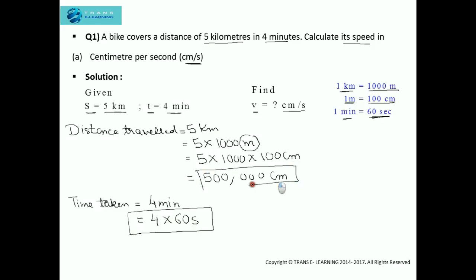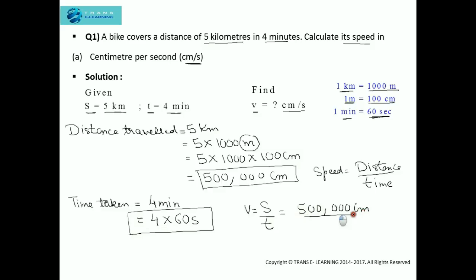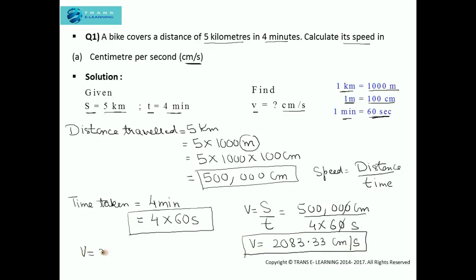We need to find the speed. Speed = distance traveled ÷ time. That is equal to 500,000 cm ÷ (4 × 60) seconds. On solving this, we get the value as 2083.33 cm per second. You can write it as 2083.33 cm per second, or if you want to round off, you can write it as 2083 cm per second.